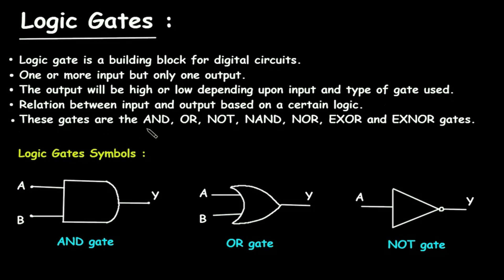These gates are the AND, OR, NOT, NAND, NOR, XOR, and XNOR gates.